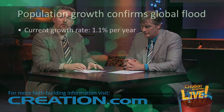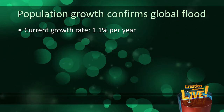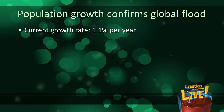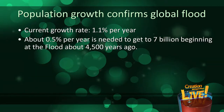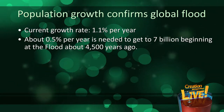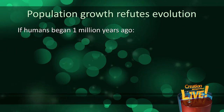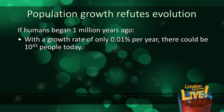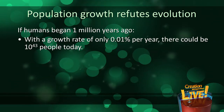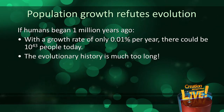Our subject this week is evidence for a global flood — we've looked at geology and paleontology, and now let's turn to ancient history. According to the Bible, the human population was restarted at the flood with just eight people, about 4,500 years ago. We can start by looking at population growth. The current growth rate is 1.1% per year. You only need about half a percent to get to 7 billion people starting at the flood about 4,500 years ago. But if humans began 1 million years ago as evolution says, with a growth rate of only 0.01%, there would be 10 to the 43rd power people today — that's a one with 43 zeros. Biblical history gives the right dates.